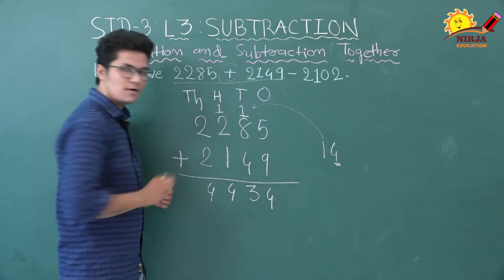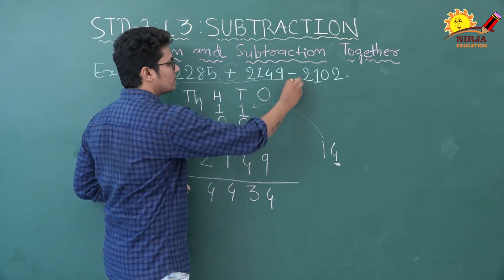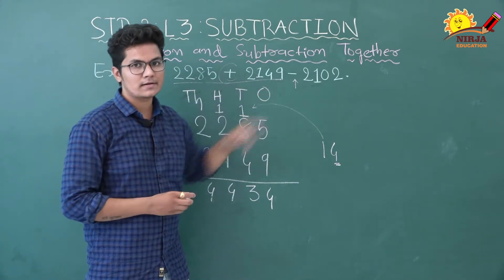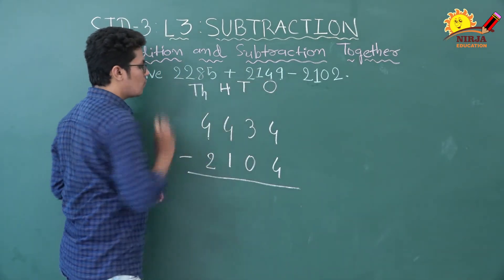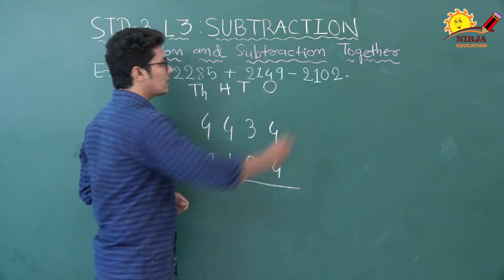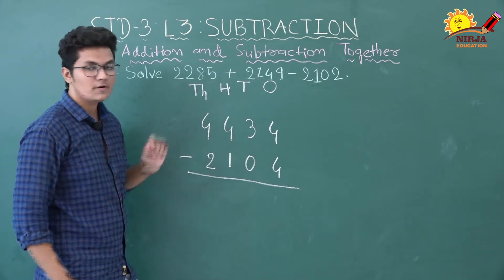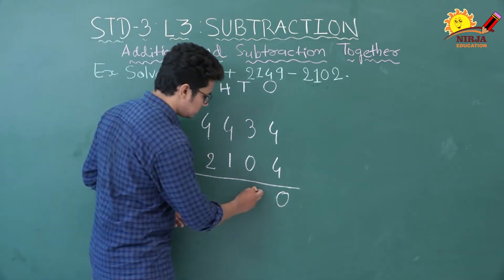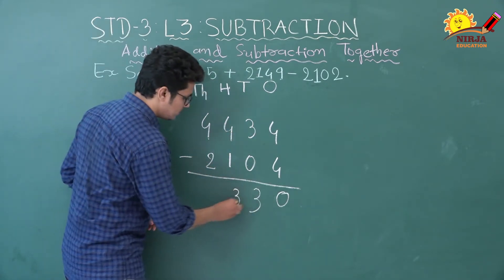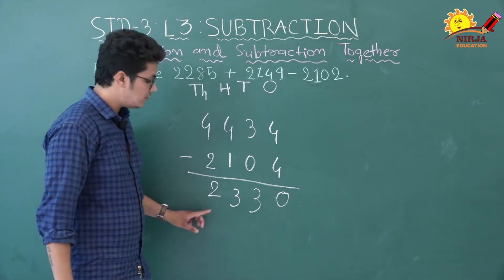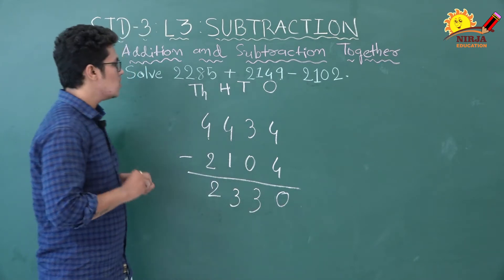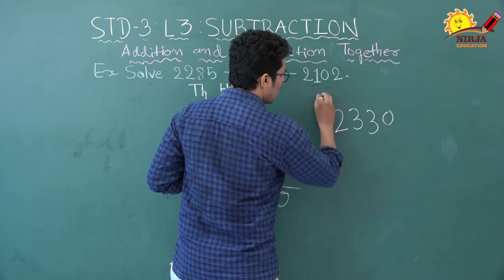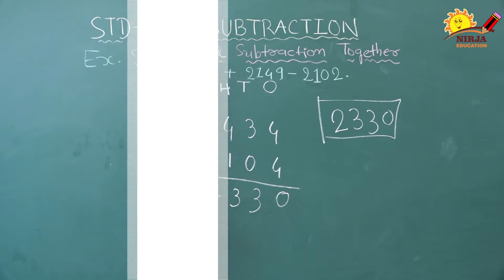Now we have to do subtraction. Addition is done, now we will subtract these two numbers from the sum. The sum of these two numbers was 4434, and we will subtract this number from the sum. Starting from ones place: four minus four is zero, three minus zero is three, four minus one is three, and four minus two is two. So our difference is 2330.